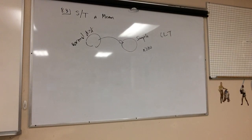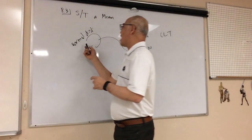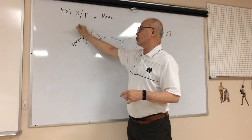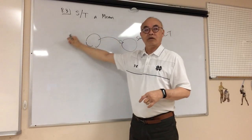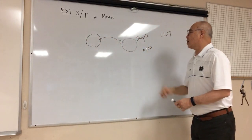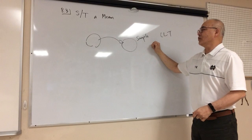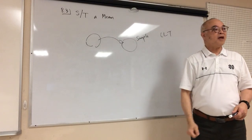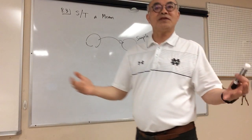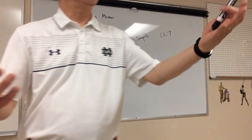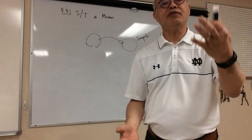So either the population is normally distributed, or n is greater than 30. So if I did not know whether this was a normal distribution, and my n is less than 30, then what do I do? What happened when we were doing the confidence intervals? What did we have to do? There was a specific step that was required for us.